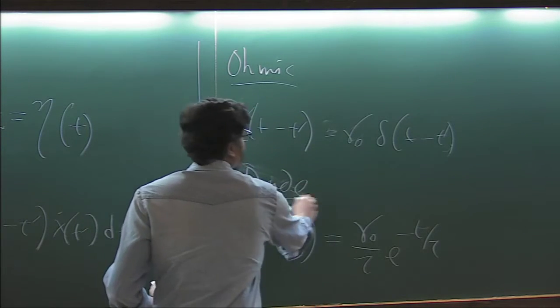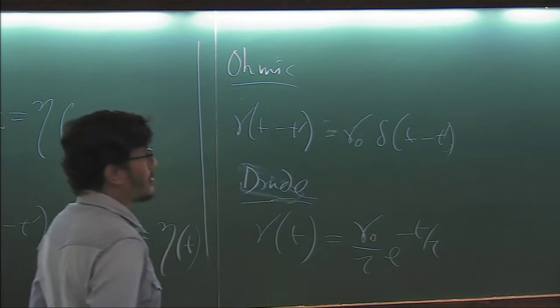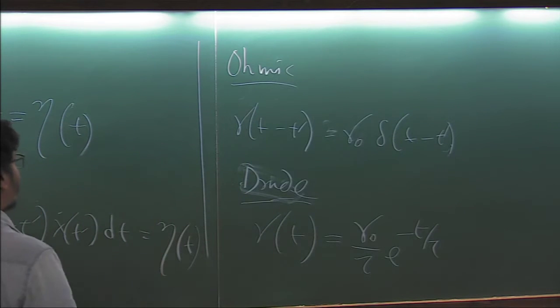So this is that thing, Rubin, Drude, and Drude and Ohmic. So this is Markov, this is for non-Markov. So this is all classical right now, whatever I am talking about.